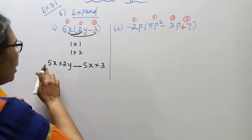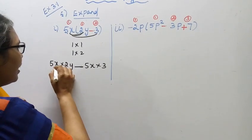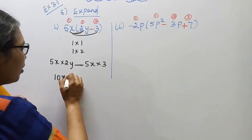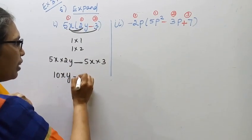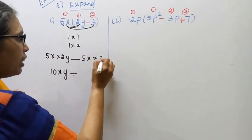Product: plus into plus, plus. 5 times 2 is 10xy, x squared y squared. Minus minus into plus gives minus. 5 times 3 is